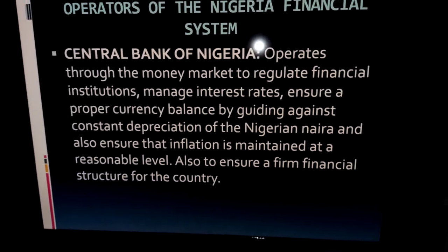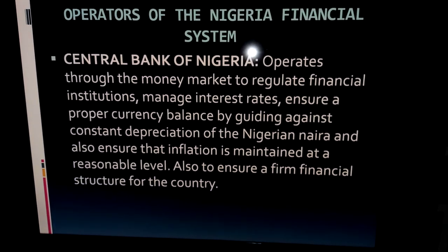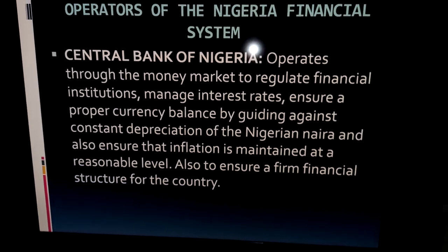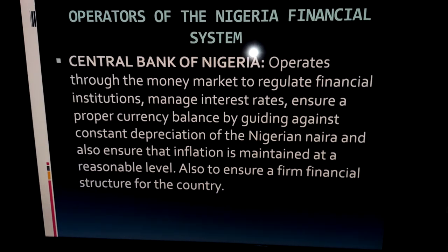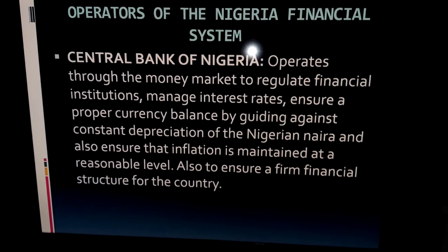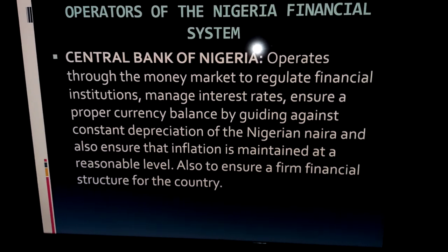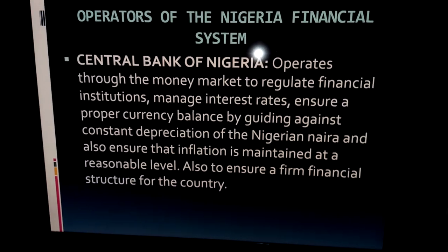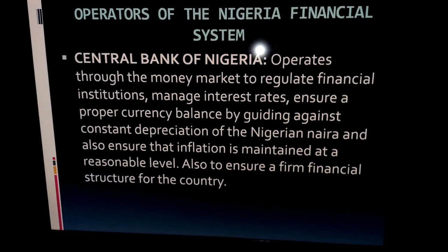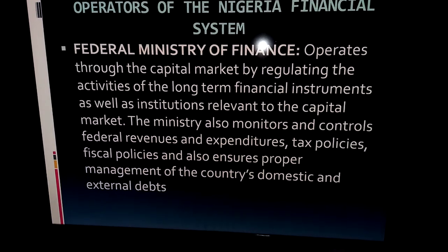Looking at the operators of the Nigerian financial system — the Central Bank of Nigeria operates through the money market to regulate institutions. The CBN also manages the country's interest rates, currency balance, and works to keep inflation at a stable and reasonable level so economic activity is not disrupted.